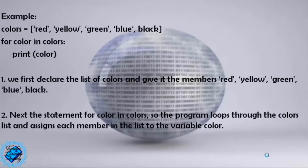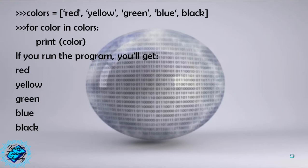Example: colors = ['red', 'yellow', 'green', 'blue', 'black']. For color in colors: print(color). First we declare the list colors and gave the members red, yellow, green, blue, black. The statement 'for color in colors' makes the program loop through the colors list and assigns each member to the variable color. The first time through, it assigns 'red' and prints 'red'; the second time it assigns 'yellow' and prints 'yellow'. The program continues until the end of the list, giving: red, yellow, green, blue, black.